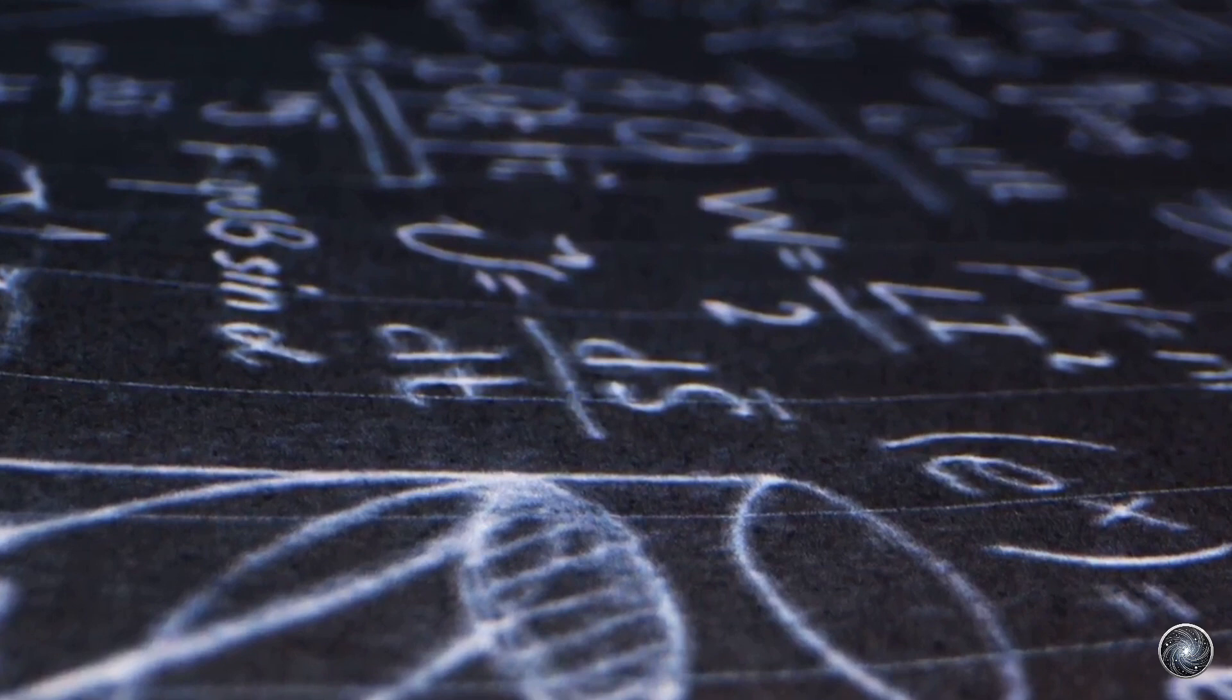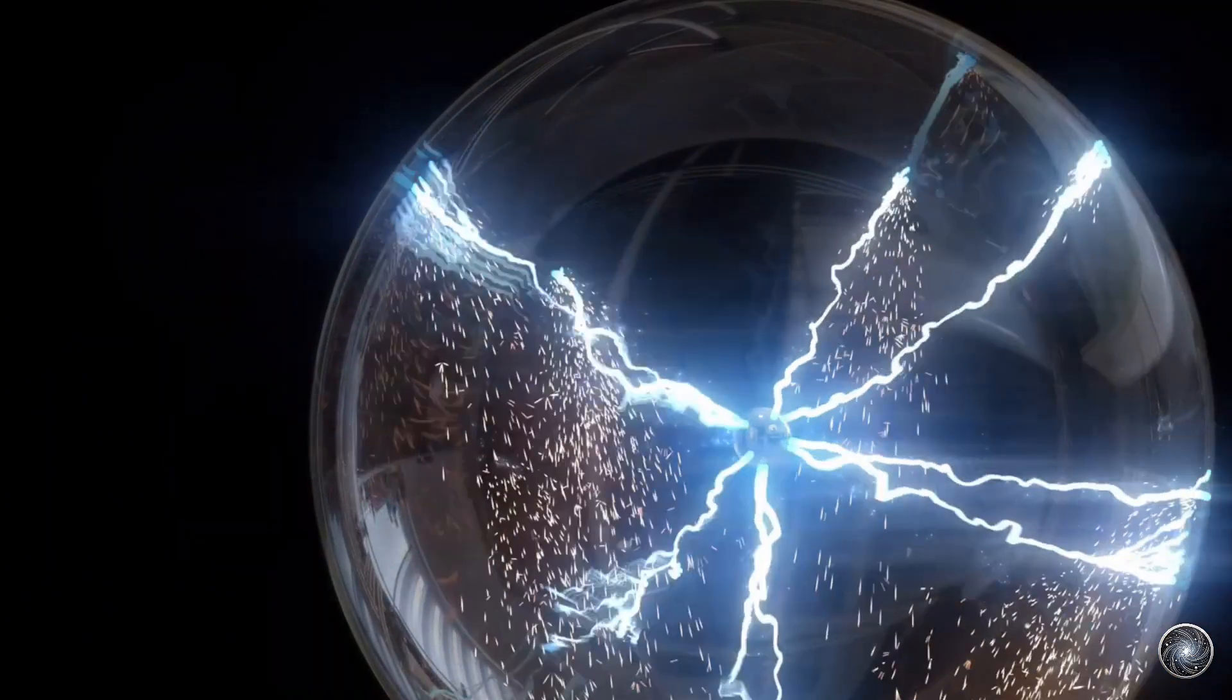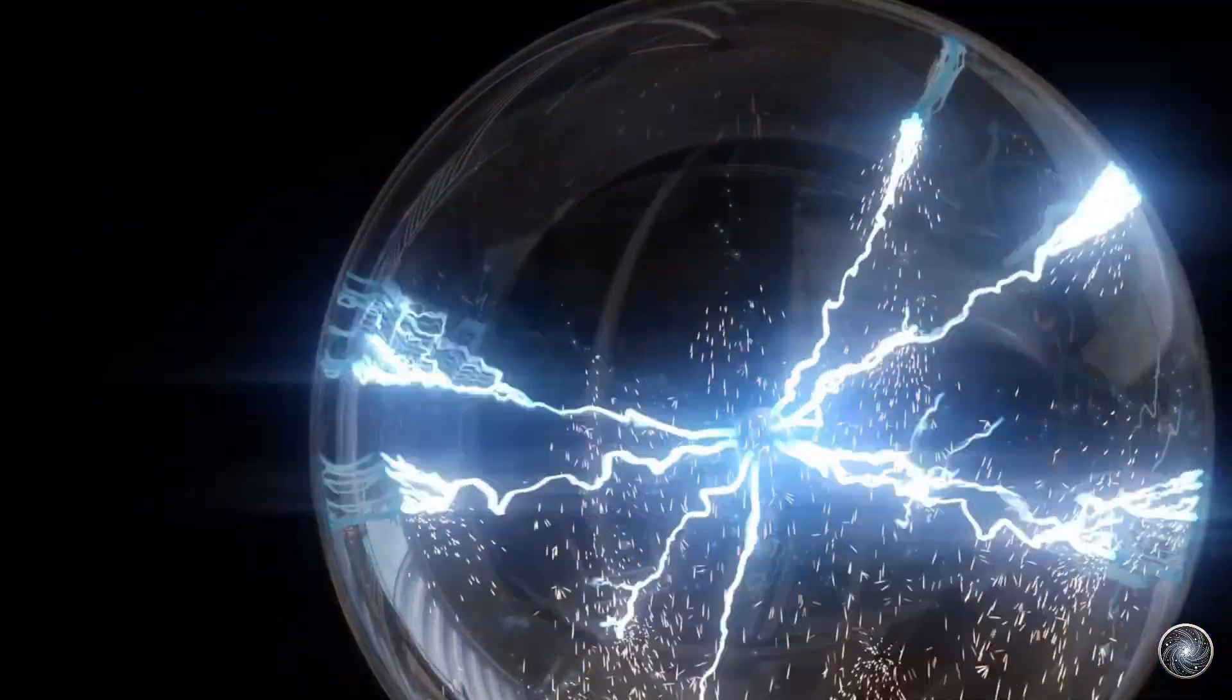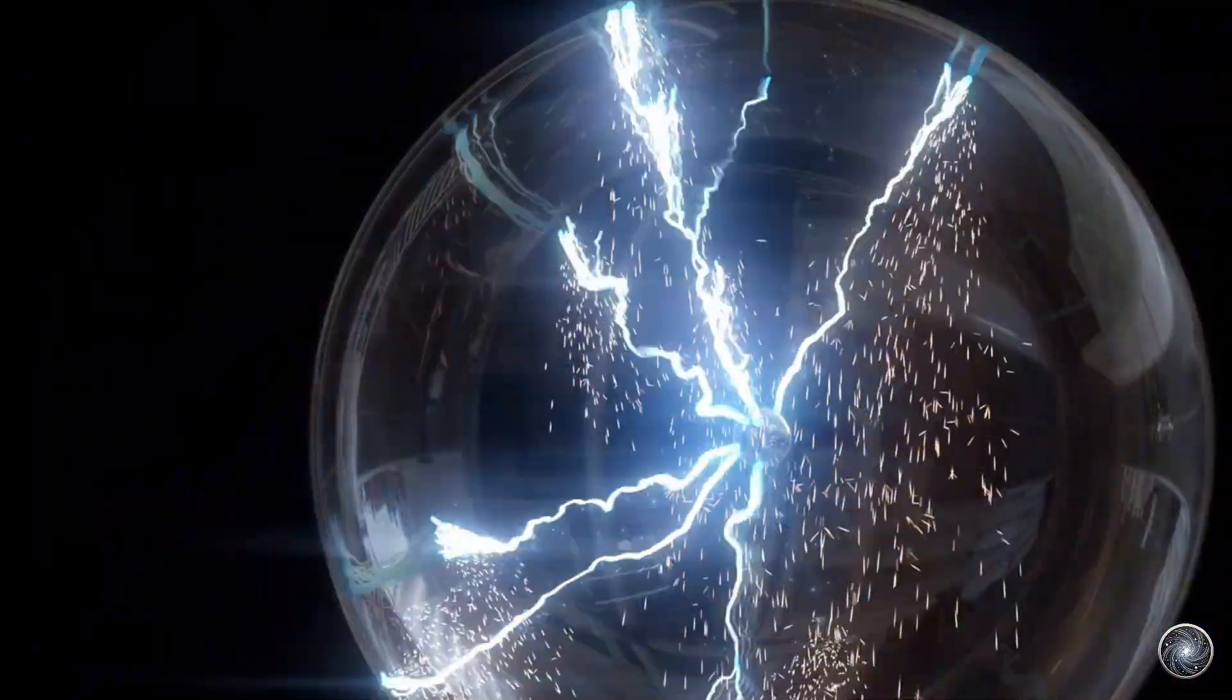They describe how electric and magnetic fields are generated and altered by each other, and by charges and currents. These equations show how electricity and magnetism are made by charges, currents, and changes in the fields themselves.